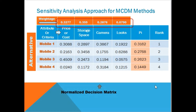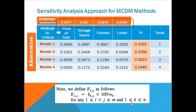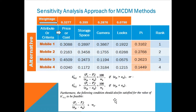Through sensitivity analysis, we can determine the smallest change in weights which can alter the existing rank of the alternatives. For that, we need to find the value of delta, which denotes the minimum change in the current weight of criteria CK such that the ranking of two alternatives AI and AJ is reversed. Delta-dash is defined by multiplying delta by 100 and dividing by the current weight — it represents the percentage change in criteria weight required to change the ranking.